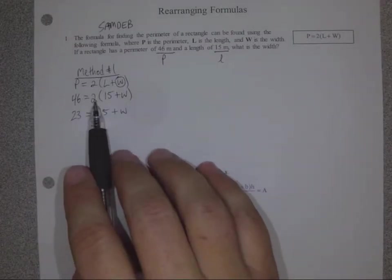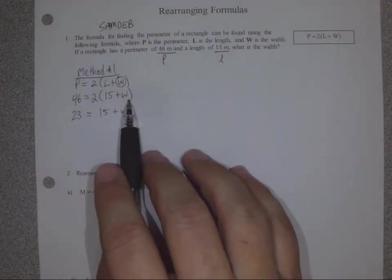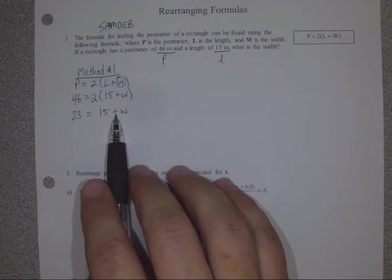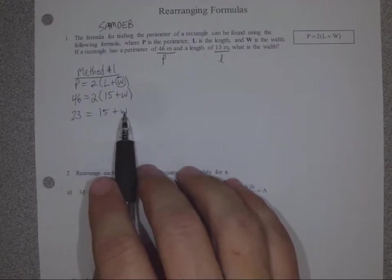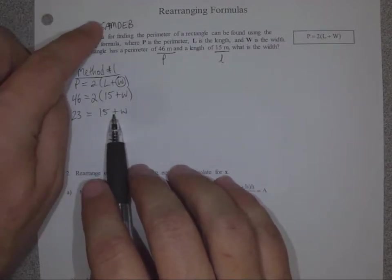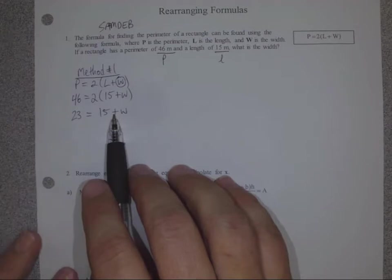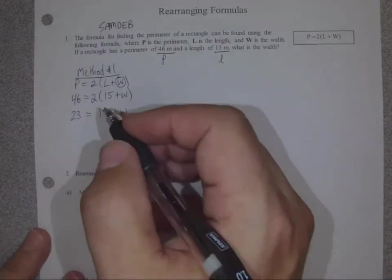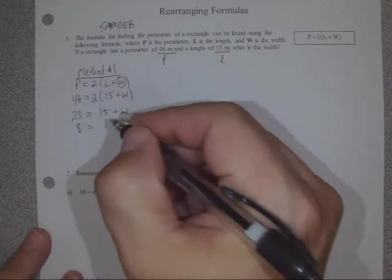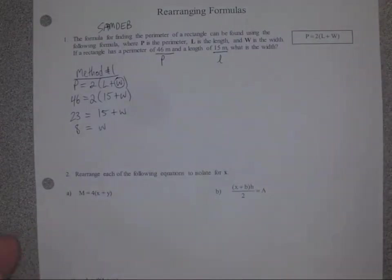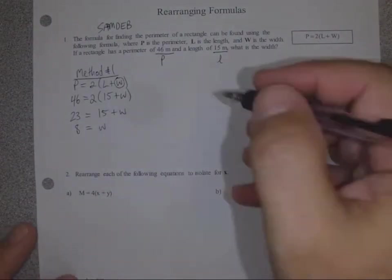Now that the 2 is gone, the brackets don't matter anymore. So we now have an addition here between the 15 and the W. And to get rid of an addition, we subtract. 23 subtract 15 is 8. 8 equals W. So that's method 1.